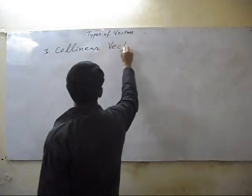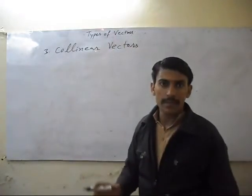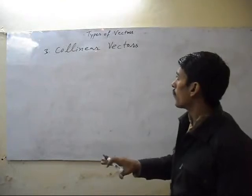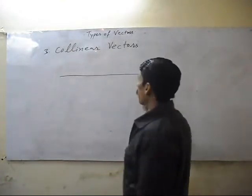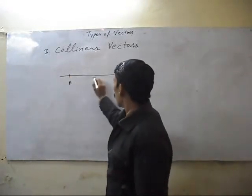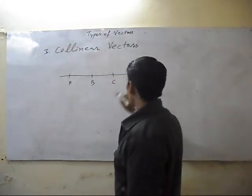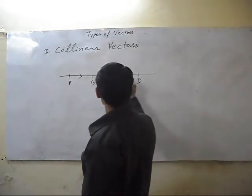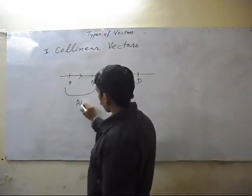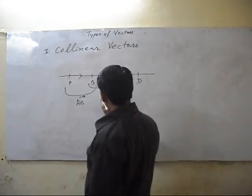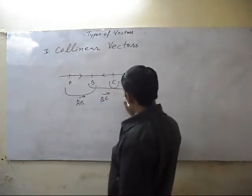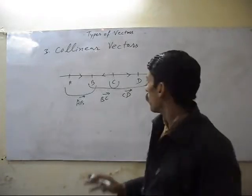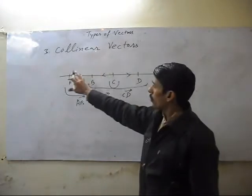Collinear vectors. Two or more vectors will be collinear if these vectors are on the same line. Vector AB and vector CD will be collinear vectors because these are on the same line.